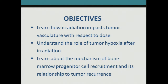The objectives are to learn how radiation impacts tumor vasculature with respect to radiation dose — whether hypofractionated or hyperfractionated — and to understand the role of tumor hypoxia after radiation, because if you damage vasculature, you induce hypoxia and that affects tumor response, as we've just seen quite eloquently in the first two talks. And then to learn about the mechanism of bone marrow progenitor cell recruitment after radiation in response to hypoxia, and how this drives tumor recurrence, specifically in a model of GBM.